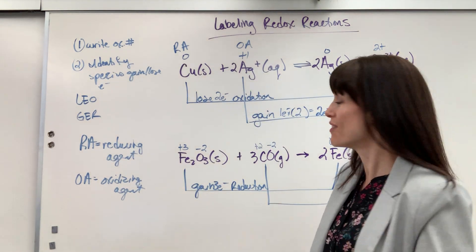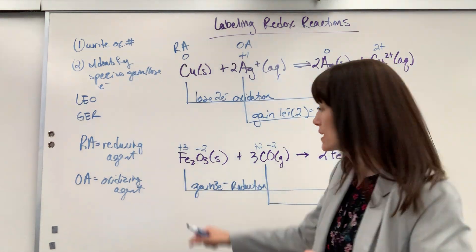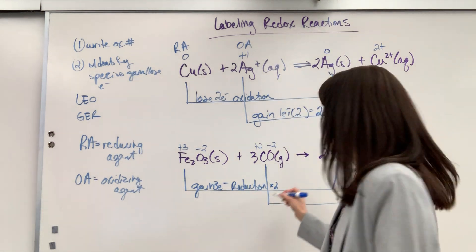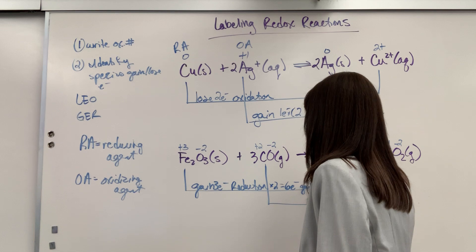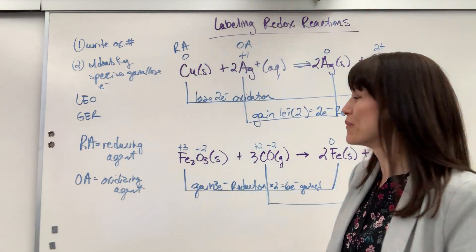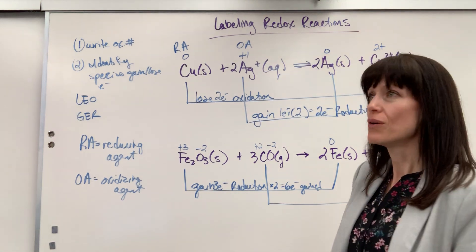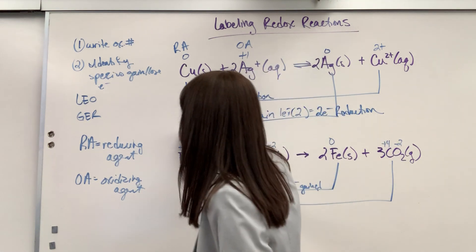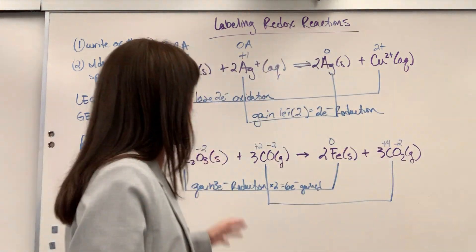Little side note on this. That's for one iron. But how many irons do I have? Two. See that subscript two? So I'm actually going to multiply that by two. Because I have two irons, it means we will have a total of six electrons gained. Or reduced. The iron's reduced. And it's six electrons gained. Now, whatever is reduced, which agent is that? I think just opposite. It's the oxidizing agent. So iron's going to be the oxidizing agent.